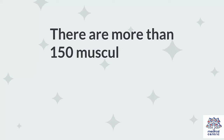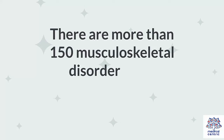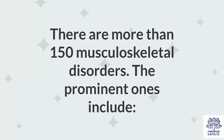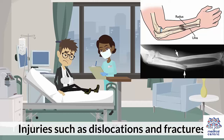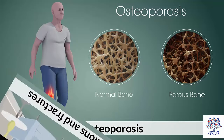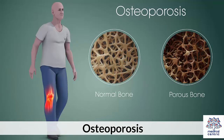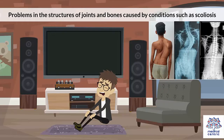There are more than 150 musculoskeletal disorders. The prominent ones include: autoimmune conditions and arthritis; injuries such as dislocations and fractures; osteoporosis; and problems in the structures of joints and bones, caused by conditions such as scoliosis.